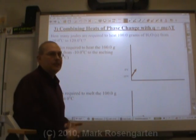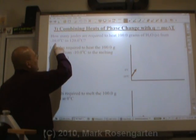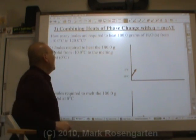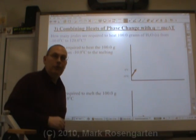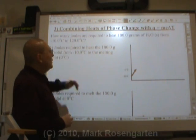You want to know why? A couple of reasons. First of all, between negative 10 and 120, there are two phase changes. At zero, you've got melting, so you need heat of fusion. And at 100 degrees, you have boiling, so you need heat of vaporization.